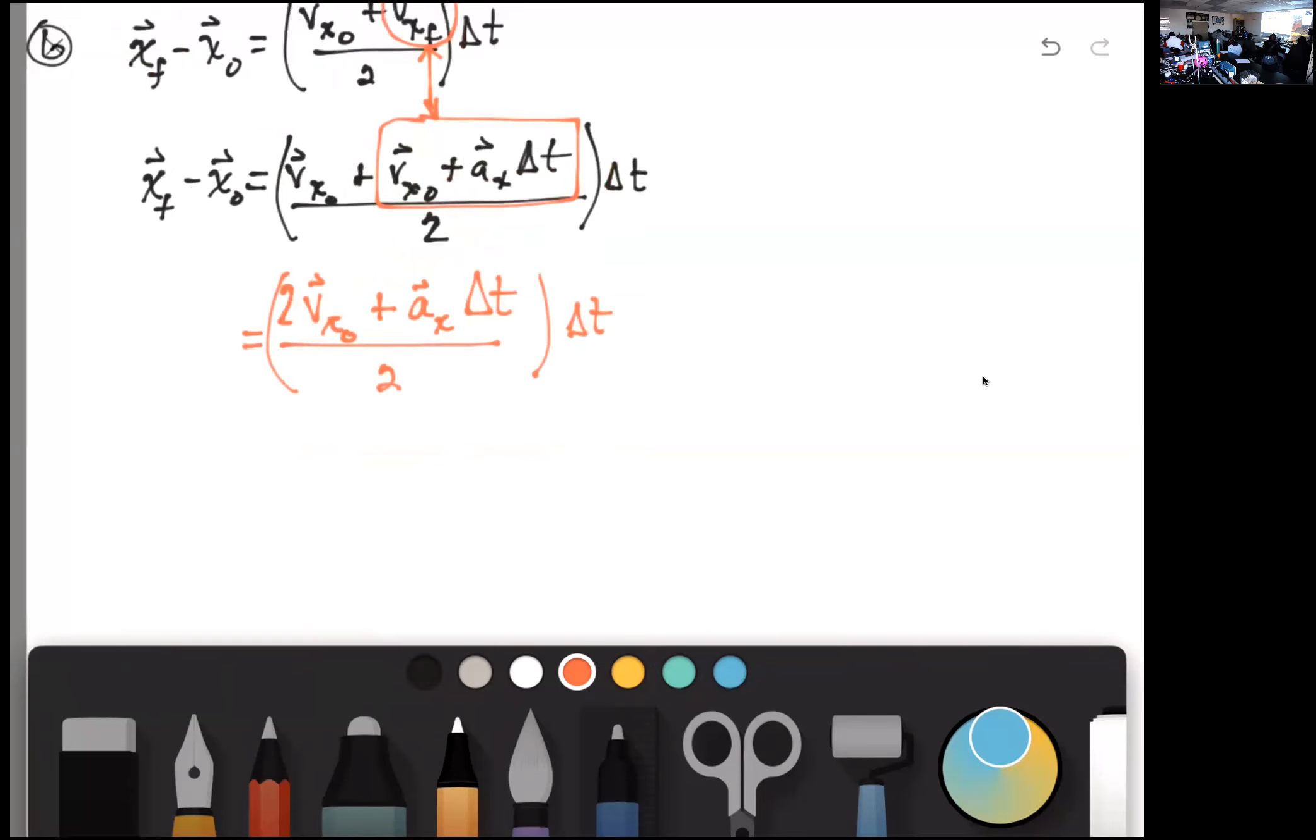It is a lot for me to take in and I've been studying it for years. So now we're going to go ahead and distribute delta T. So we have 2 VX naught delta T. I'm multiplying each term by delta T. And then we're going to have AX delta T squared. All over 2.